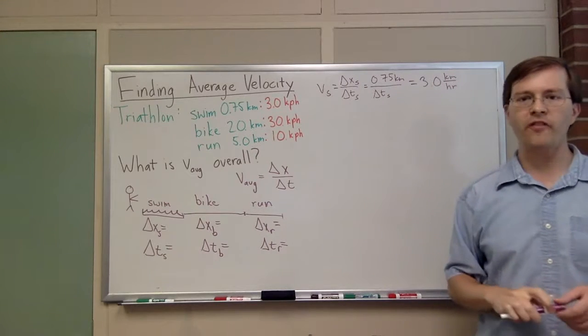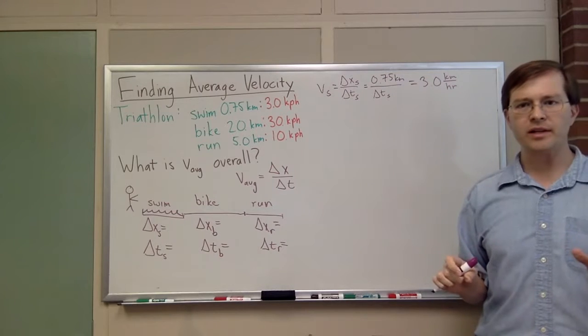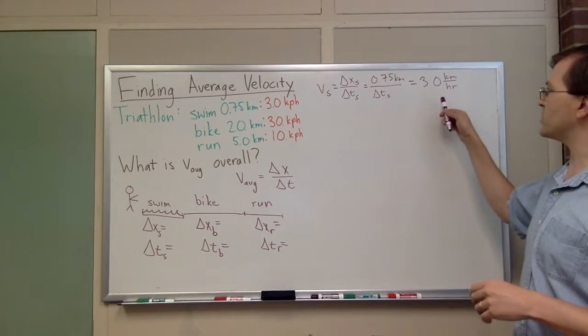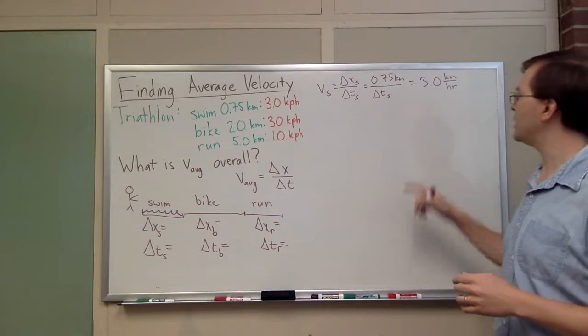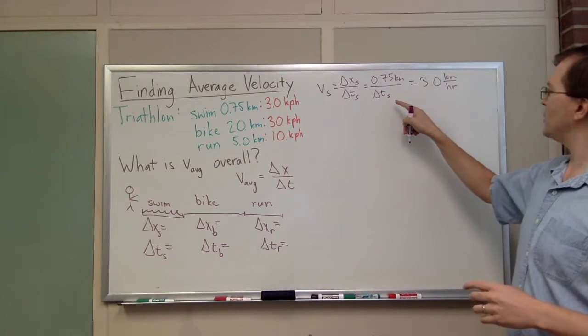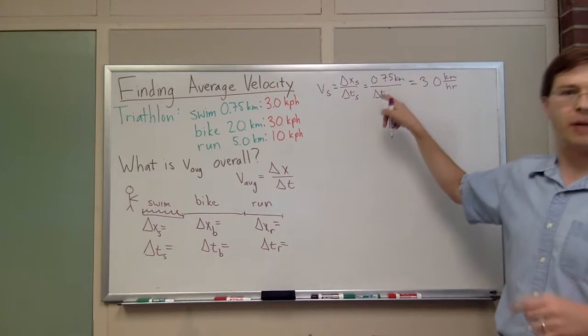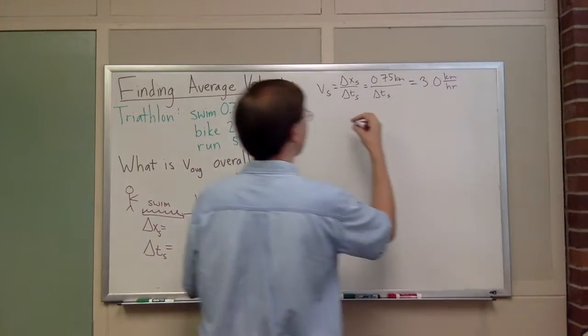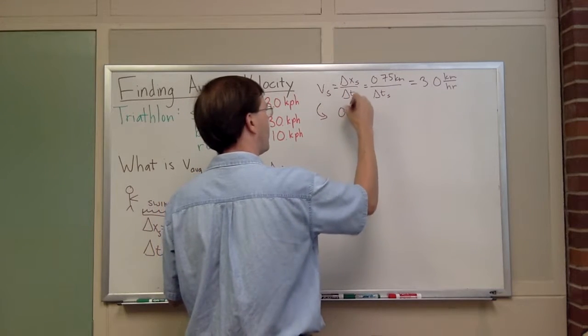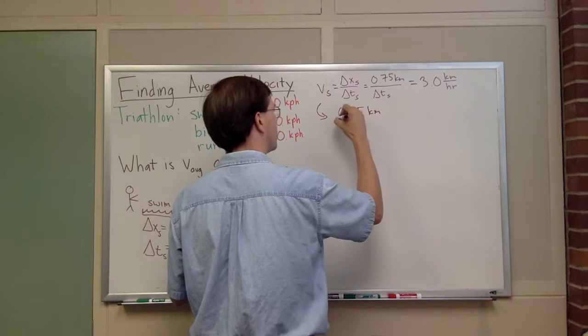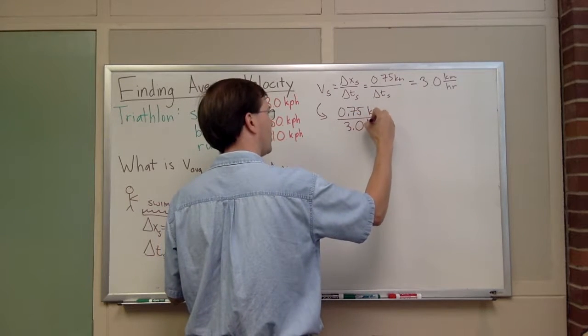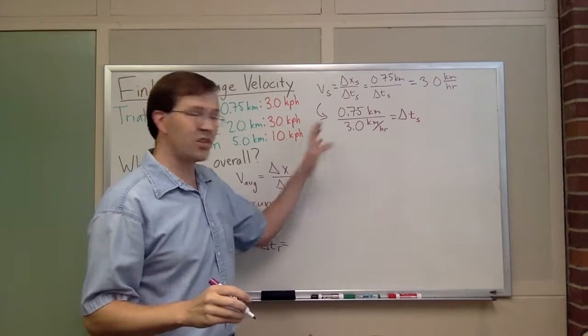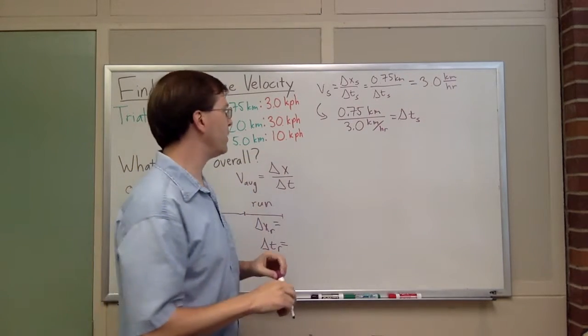I want to figure out this unknown delta t swim. To do that, I can either do it symbolically or directly using these numbers. I'll show you both ways. Using the numbers, I'll set these two things equal. I need to multiply both sides by delta t swim to get it out of the denominator, and divide both sides by three kilometers per hour. If I do that, this tells me that 0.75 kilometers divided by 3.0 kilometers per hour equals delta t swim.